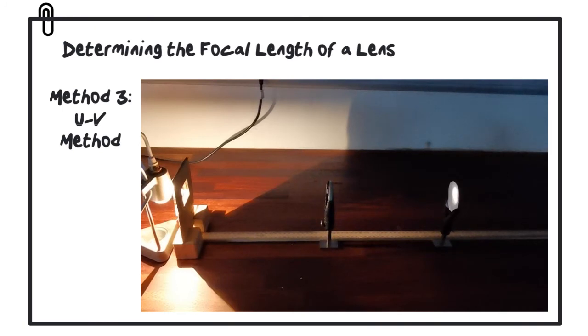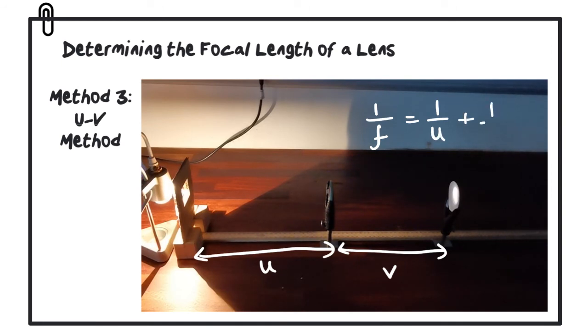The final method involves measuring the distance between the object and the lens, which we call u, and also the distance between the lens and the screen, which we call v. These are related by the formula: 1/f = 1/u + 1/v.